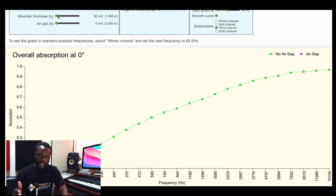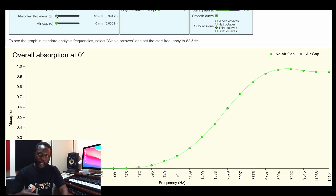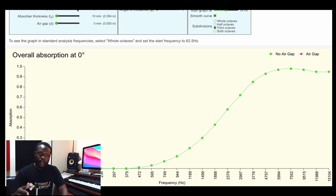Closed cell means air cannot pass through them, so when sound vibrations encounter such materials only a very tiny amount will be absorbed — at five kilohertz and above. So a cushion of five inches that only absorbs above 5kHz is no different from a towel, because towels and curtains absorb those frequencies too.